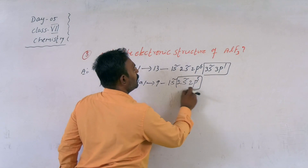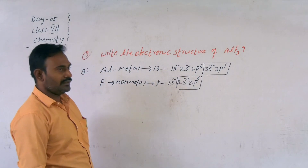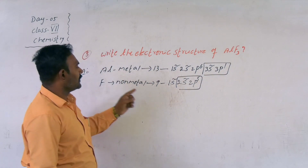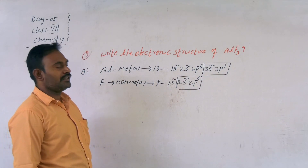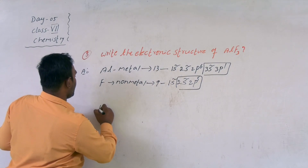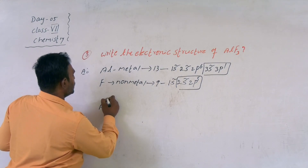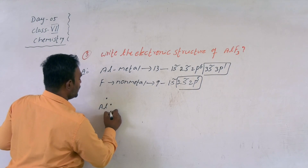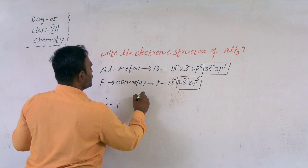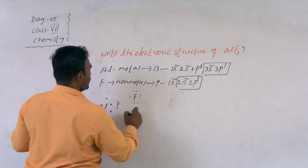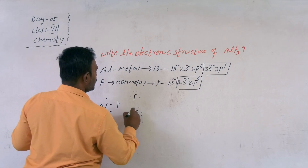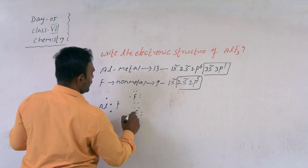Coming to fluorine: atomic number 9. Configuration: 1s2, 2s2, 2p5, so 7 electrons are in the outermost shell. Aluminium tries to lose 3 electrons and each fluorine tries to gain 1 electron to complete their octet configuration. Aluminium has 3 valence electrons and each fluorine has 7 valence electrons.